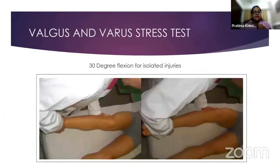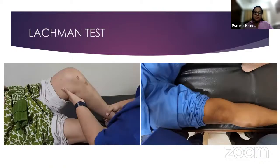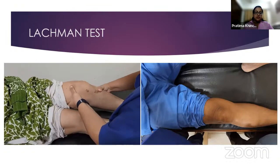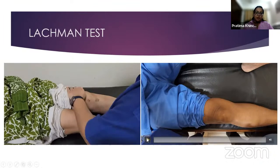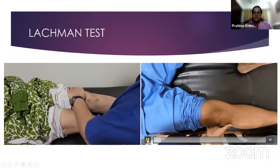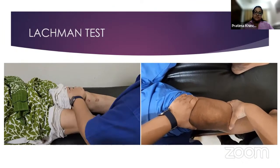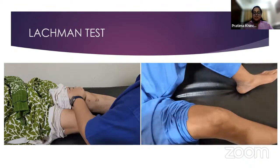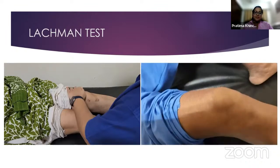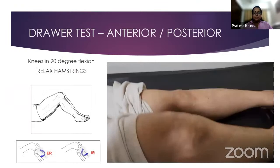The important thing is not just the joint opening, but also to determine the end point while doing the test — whether it's a hard or soft end point. The same goes for the Lachman test, ideal for ACL injury, done in 30 degrees of flexion with anterior translation of the tibia. In cases with a very bulky quadriceps, another way of doing this test is to place your own thigh under the patient's leg to get it to 30 degrees of flexion, stabilize the leg, and then check for anterior translation of the tibia. Coming to the drawer test, both the anterior and posterior drawer tests are done with the knee in 90 degrees of flexion. It's important to relax the hamstrings.